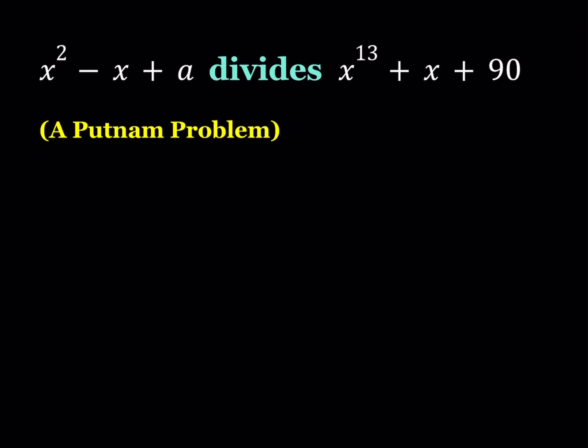Hello everyone. In this video we're going to be solving a Putnam problem from 1963. We're going to find for which integer values a does x squared minus x plus a divide x to the power 13 plus x plus 90.